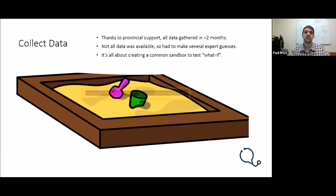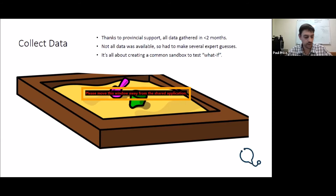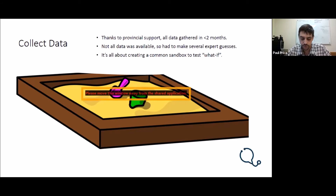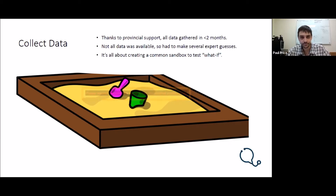So we needed to collect the data. Thanks to all the provincial support and the different groups in the government, we gathered this data in less than two months. There were cases where we didn't have data available, so we had to make expert guesses. Sometimes the data became available later and we went back and reworked it. Sometimes the guesses were spot on, sometimes they had to be tweaked. We had to make expert guesses on things like the infection traveler rate — what rate of infected travelers is assumed if we let the border stay open for modelling purposes. There was some mismatching between census data and the actual ages of kids in school, so we had to make assumptions where needed. This is all about creating a common sandbox to do what-if scenarios.